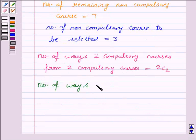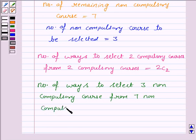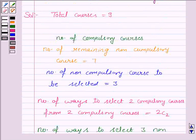And the number of ways to select 3 non-compulsory courses from 7 non-compulsory courses is equal to 7C3. This is by the theory of combination discussed in the key idea.